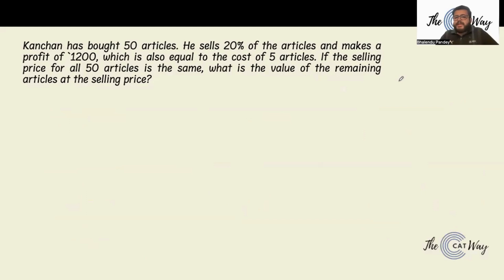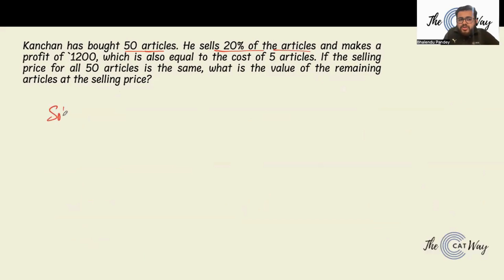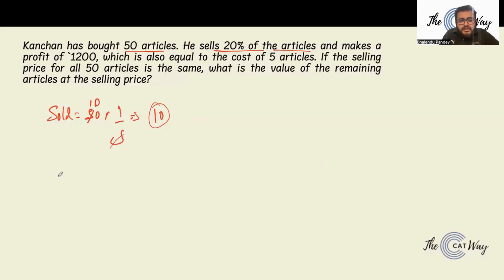Next question: Kanchan bought 50 articles. He sells 20% of the articles and makes a profit of 1200, which is also equal to the cost price of 5 articles. Out of 50 articles, 20% are sold — that is 1 by 5 of 50, so 10 articles are sold. On selling 10 articles the profit is 1200, so profit on one article is 120 rupees.